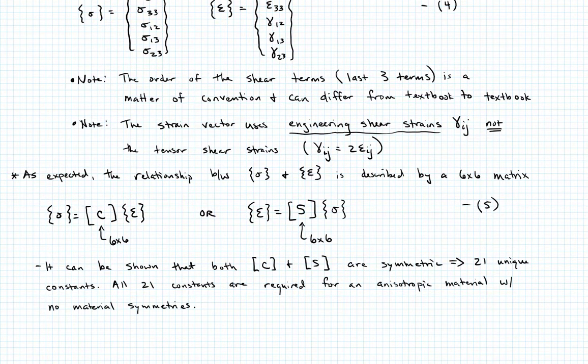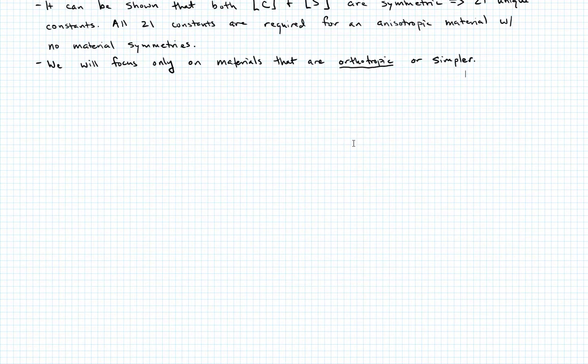So if you want to model something with no material symmetries, then all 21 constants are going to be required. Now, we're not going to focus in this class at all on that case. In fact, for our purposes, we're only going to consider anisotropic materials that are orthotropic or have even more symmetries and are simpler than that. And if you're trying to think what is an orthotropic material, a classic example is actually a woven material that's going to have one set of properties in one direction of the weave, one set in another direction in the opposite, orthogonal direction of the weave, and then of course, one set of properties through the weave thickness. That would be an example of an orthotropic material.